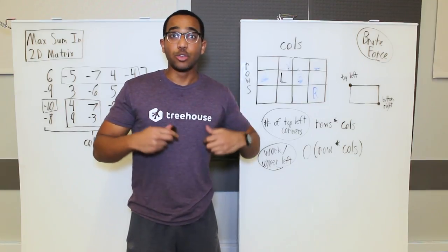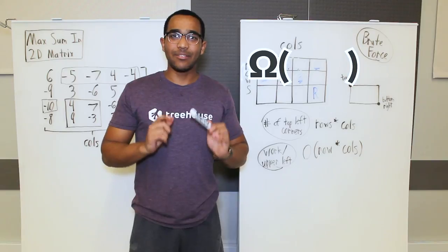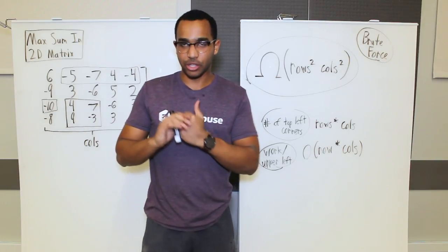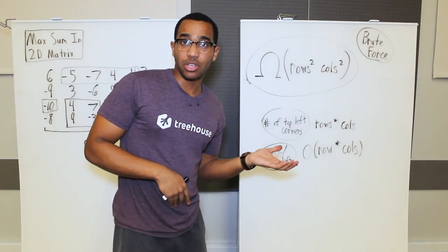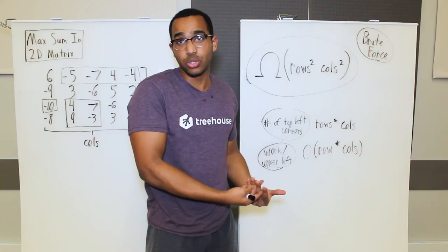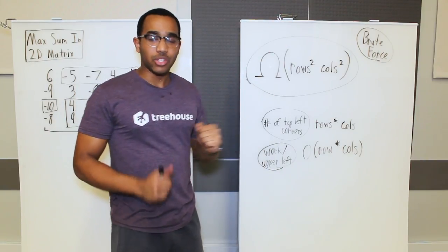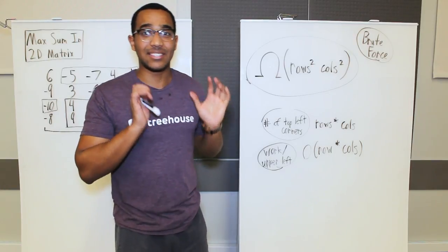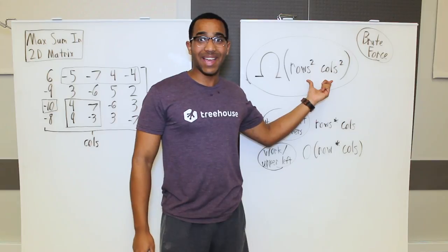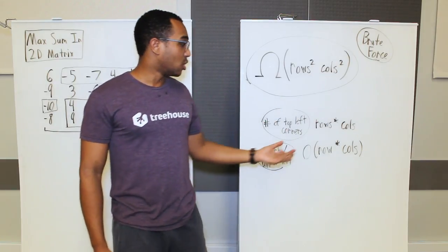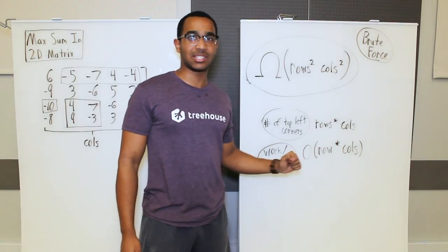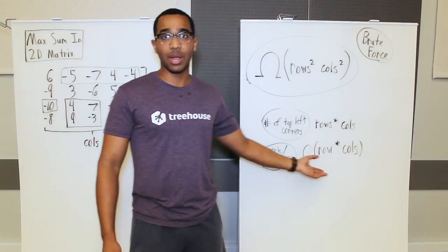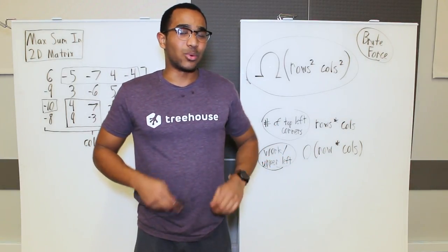To provide a lower bound using big omega: just to explore all rectangles — not even computing their sums — we do rows²×cols² work. That's rows×cols possible top-left plantings times the upper-bounded rows×cols work per planting. This can be improved; we can do better than this.